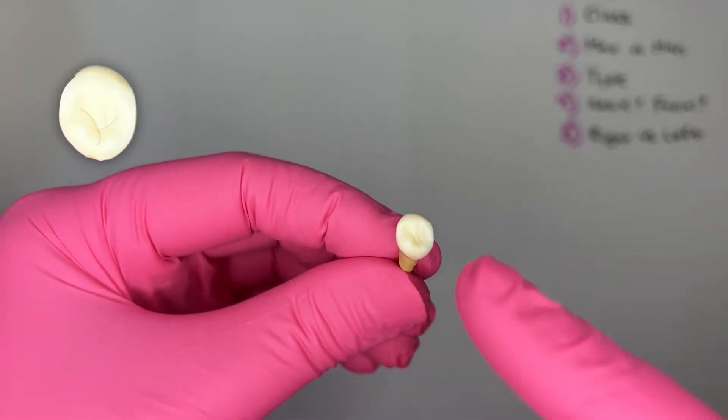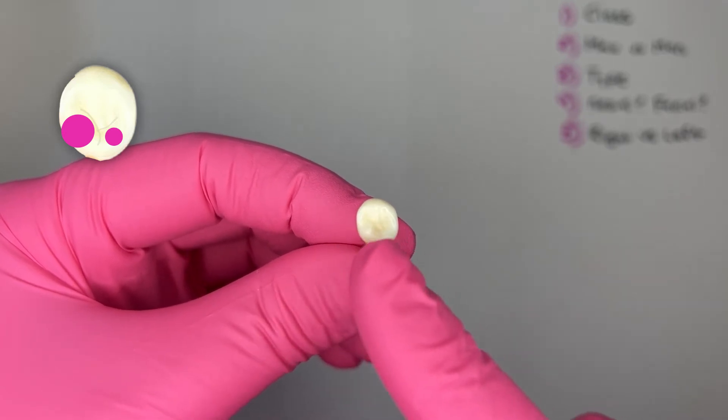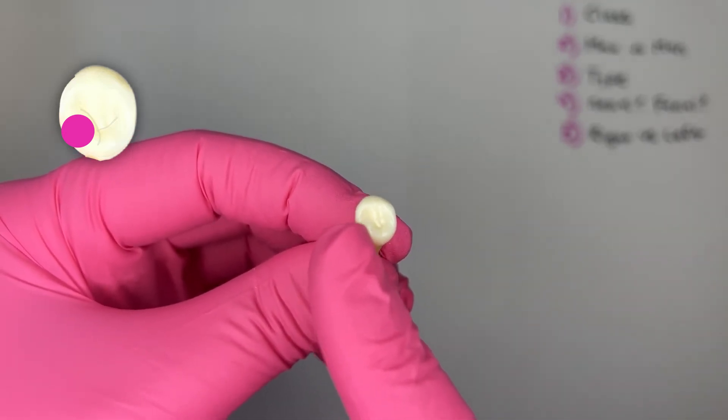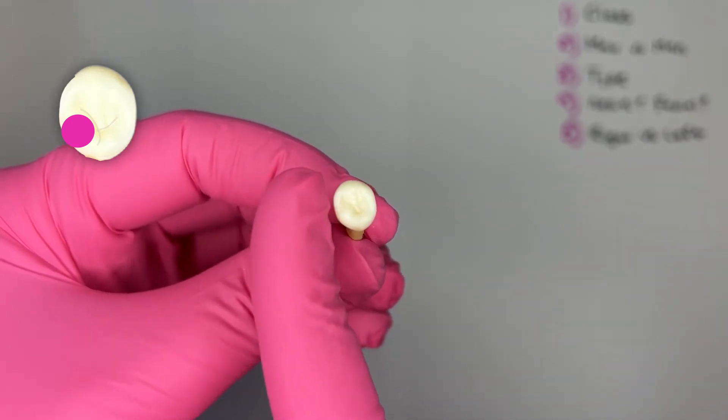Looking at the occlusal, I'm going to look at those lingual cusps. There were two of them. The larger of the two lingual cusps is on the mesial side of the tooth. So this side is the mesial.